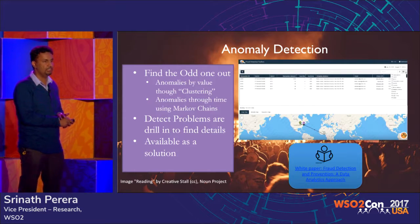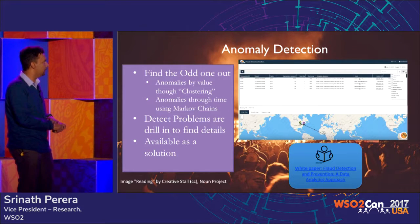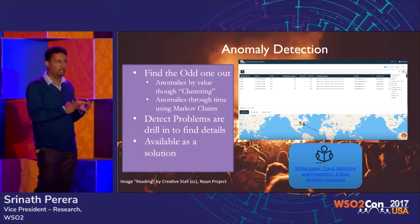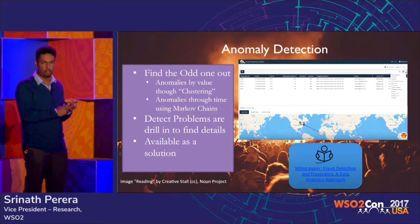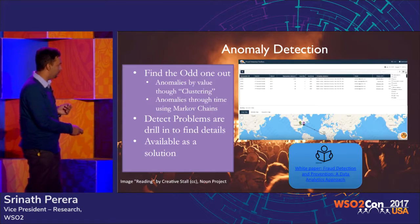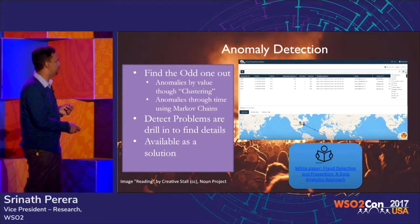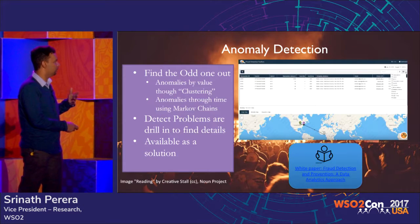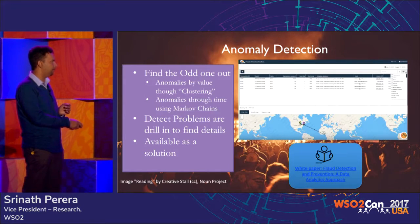Another topic we've looked at in a lot of detail is anomaly detection. This is a very common problem — it applies to fraud, predictive maintenance, and more. We've tried a long list of techniques including clustering, Markov chains, etc. There's a white paper that talks about that in a lot of detail.